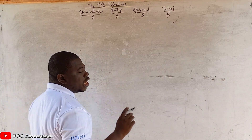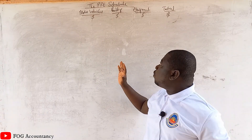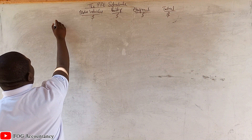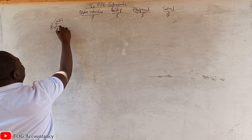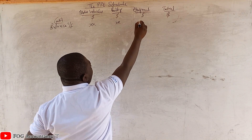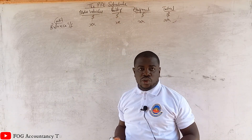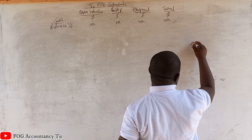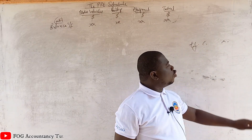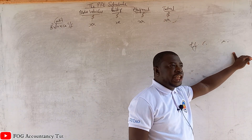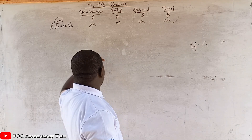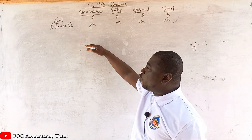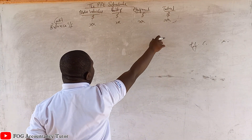So you start with the cost. We have to first deal with the cost component. When we are done with the cost components, we deal with the depreciation component, and then we know the final net worth value to carry. Under cost, I'll show the balance brought forward — the original cost that the asset was bought for, which will be shown in the trial balance. You have assets at cost, and then accumulated depreciation separately.